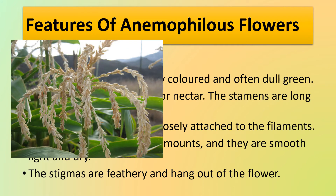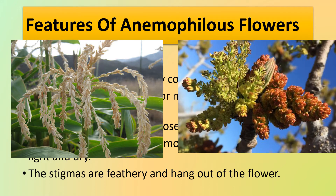Some examples are the maize plant and many other grasses, as we already saw the Peruvian feather grass and the pine flower from the previous slide. Another example is the pistachio flower, and here we can also see that the color is dull with a slight greenish color.